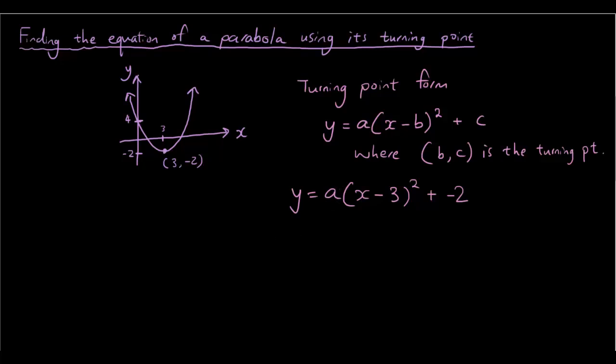So we can find a pretty easily using the y-point here. So you can see this y-intercept that is provided to you has a coordinate of 0, 4. So if we substitute the 0 into where x is and the y of 4 into this equation, then we can find what a is. So let's do that.